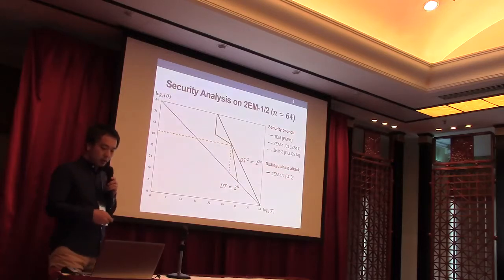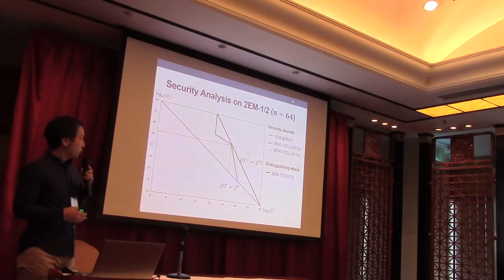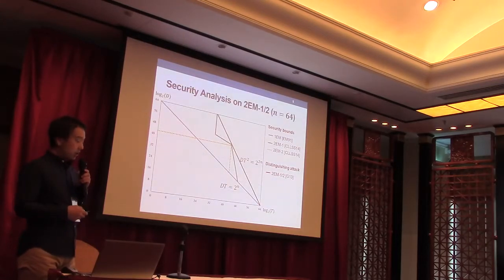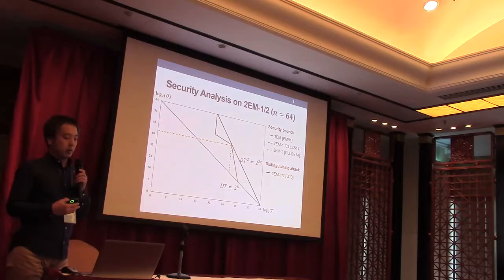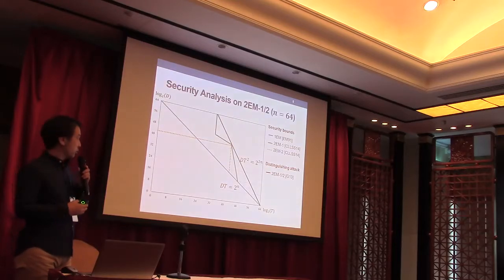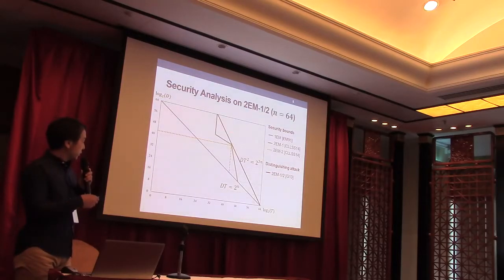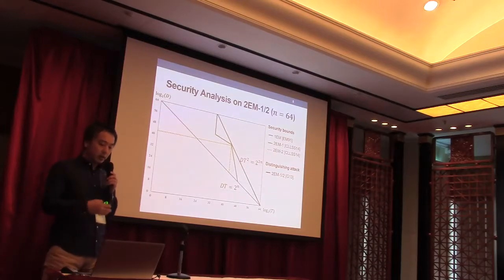So the area below these lines are considered to be secure. On the other hand, a generic distinguishing attack was proposed by Gazi in 2013. They showed the distinguishing attack requires DT squared equals 2 to the 2n.